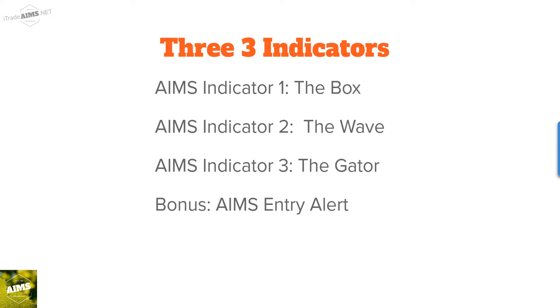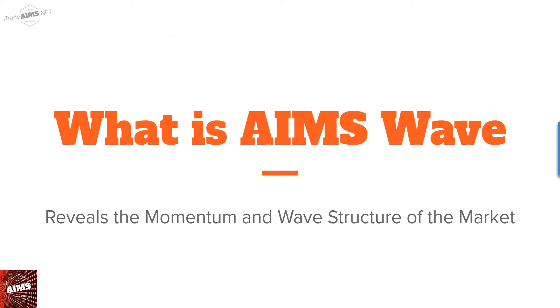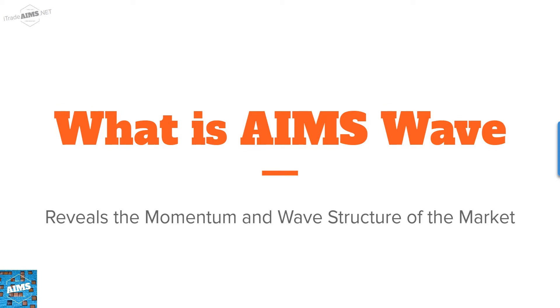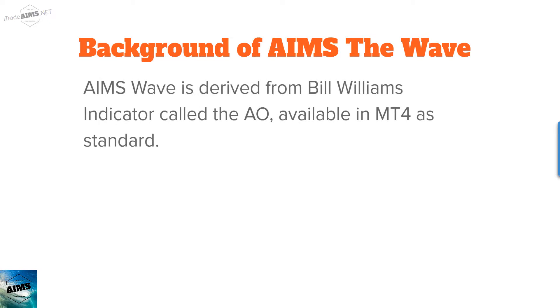When that setup is created, we get an AIMS entry alert. What is AIMS Wave? It reveals the momentum and the wave structure of the market. If you don't know about the structure of the market, I highly recommend you download the 10 Second Elliott Wave ebook — the link is in the description. AIMS Wave is derived from Bill Williams' Profitunity indicator called the AO, or the Awesome Oscillator, which is available as standard in all MetaTrader 4 platforms.